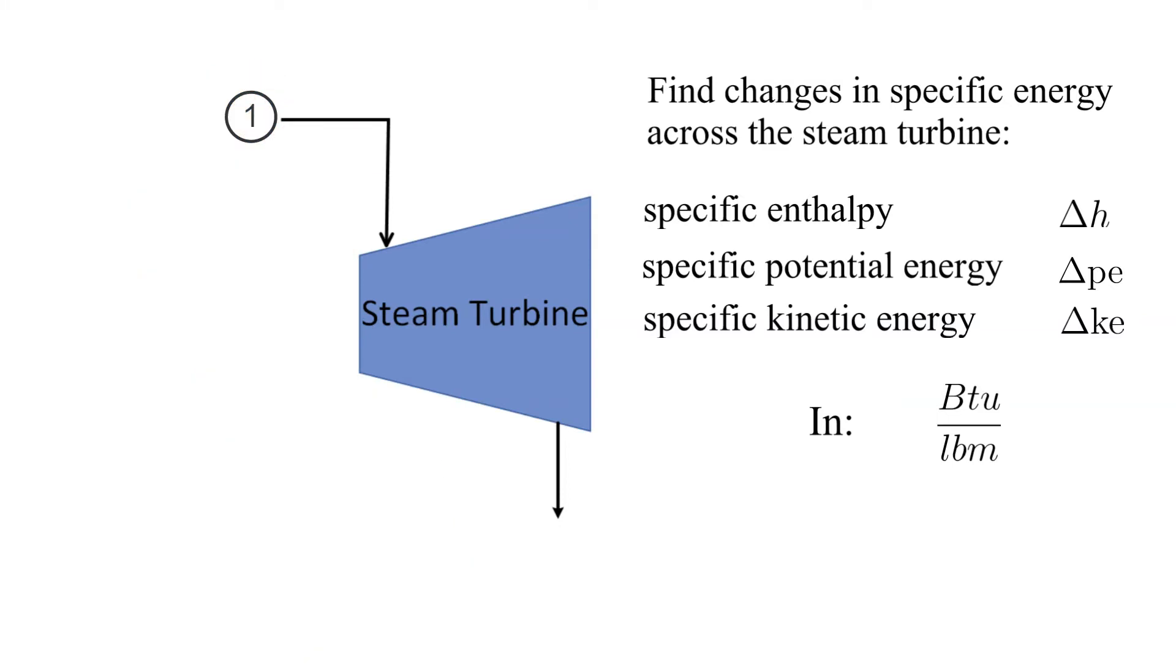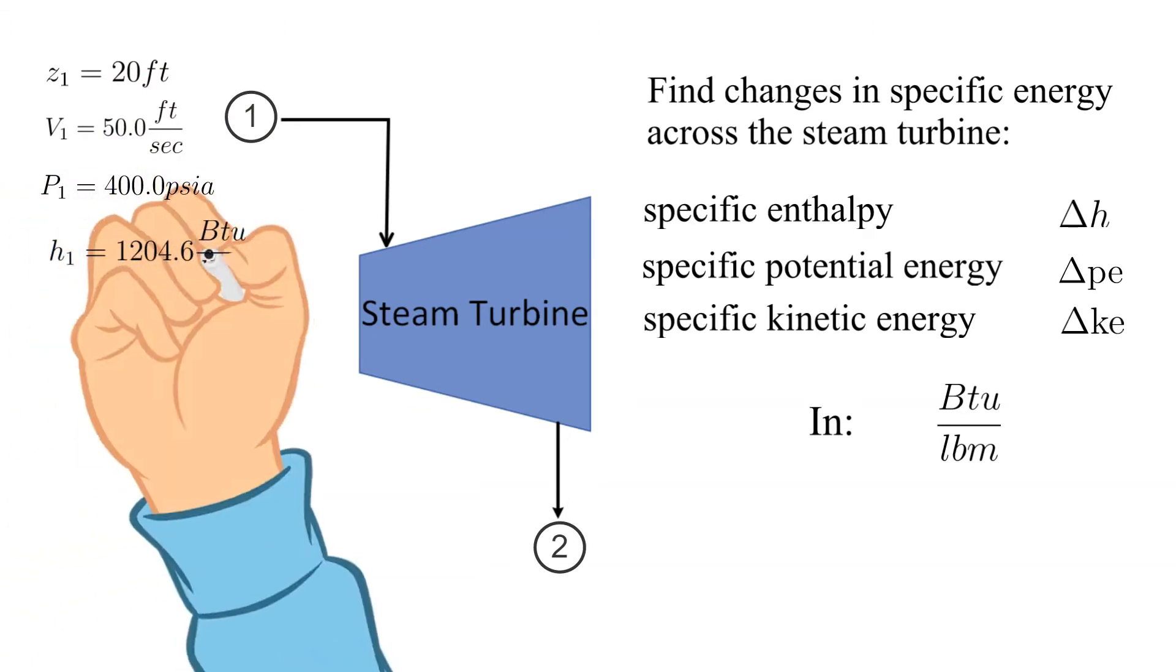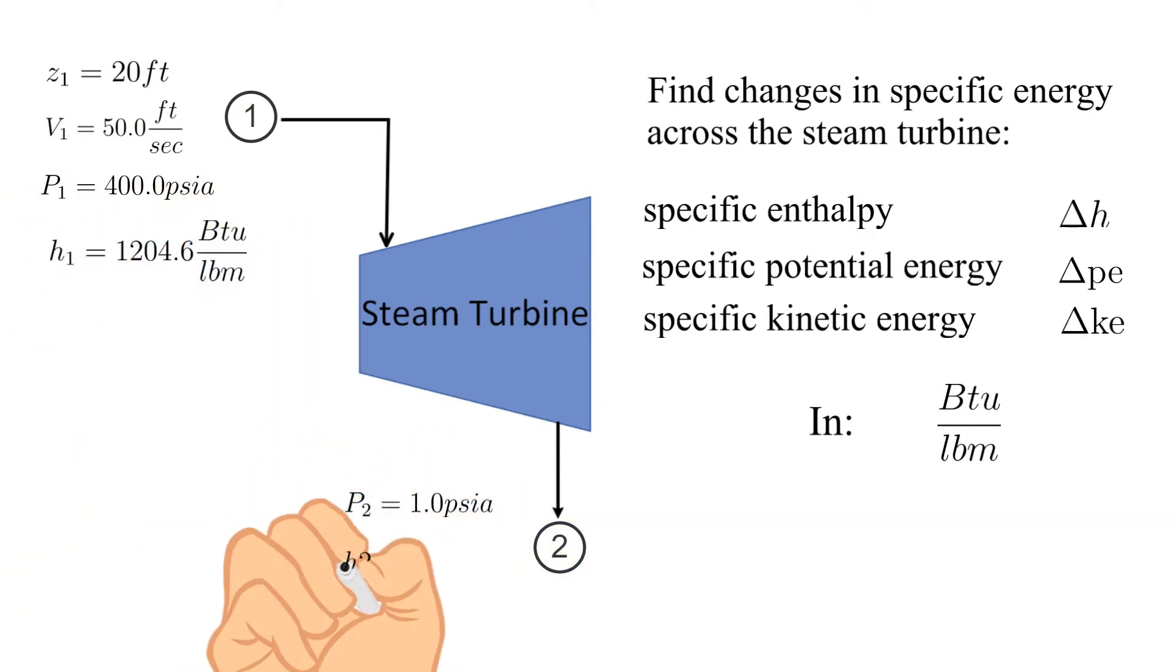We identify point 1 as the inlet to the steam turbine and point 2 as the outlet. The elevation, velocity, pressure, and enthalpy are provided for both points 1 and 2 as shown.